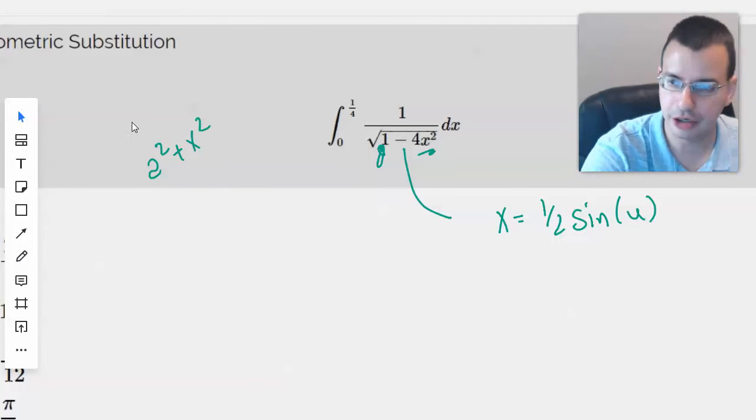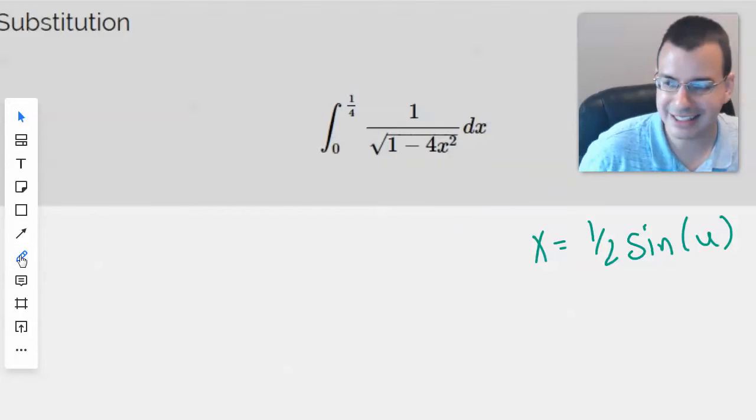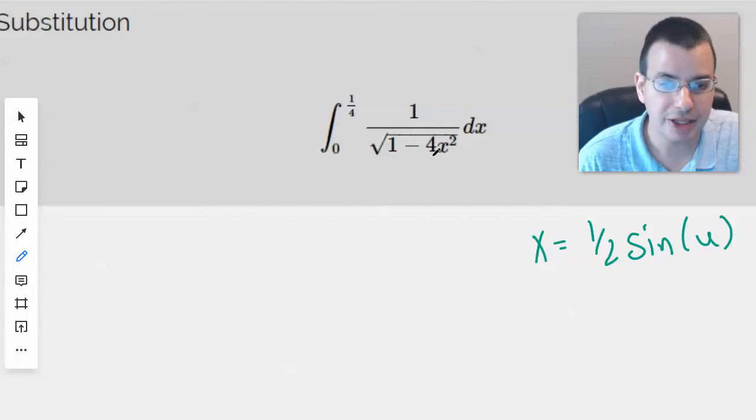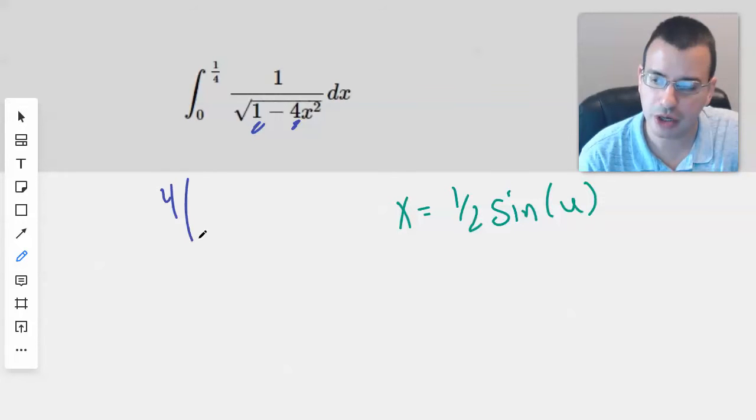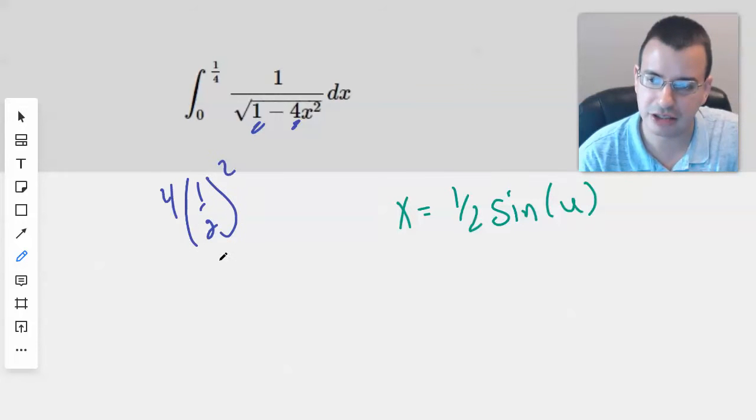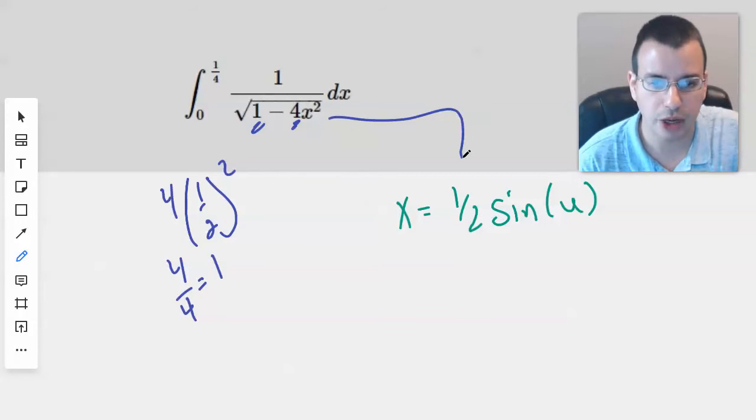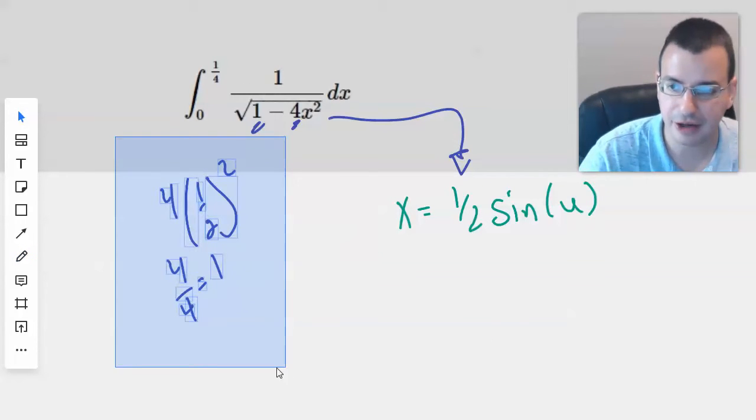And our goal here is we want these to be the same. We want to make this four equal to this one. And the way we're going to do that is by multiplying it by one half squared. One half squared will work out kind of like this. So we have four over two squared, which is four, which will give us one. That's our goal. And that's why we say that we have x equals one half sine of u. That's where the one half comes in.